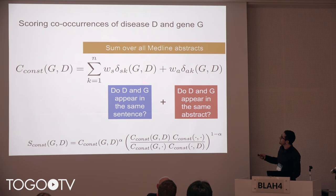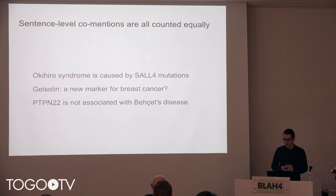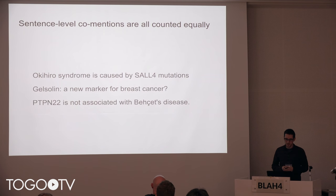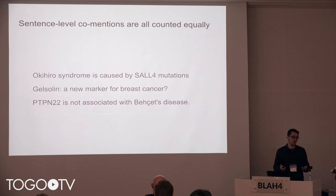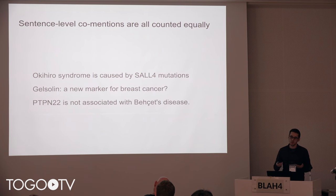But if you look at this, you see that each sentence in each document is counted equally. Here are three examples of sentences that co-mention a disease and a gene. The first reads: 'Okihiro syndrome is caused by SALL4 mutations' — that clearly talks about an association. The second, 'Gelsolin, a new marker for breast cancer' — that only hints at a possible association. The third, 'PTPN22 is not associated with Beckett's disease' — that clearly states there is no association. While in the current scoring scheme these are all counted equally, what we are working on now is to improve the scoring scheme to assign each sentence a score of how likely it actually is talking about an association.